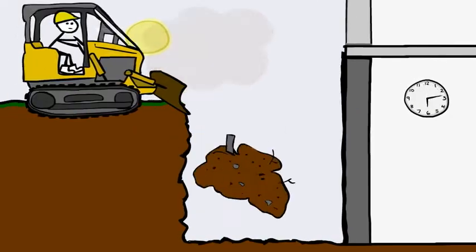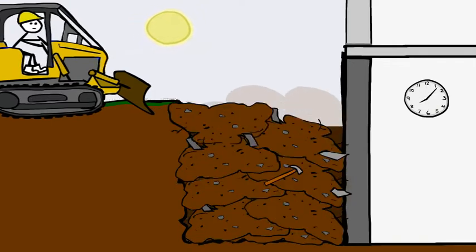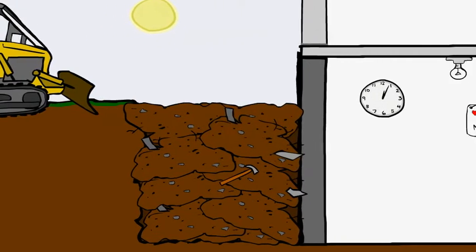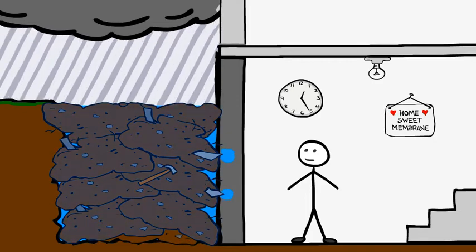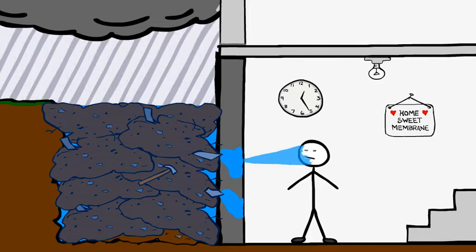What happens when the membrane tears? Inaccessible areas are sometimes impossible or too costly to fix. And whose reputation is on the line if the waterproofing fails?